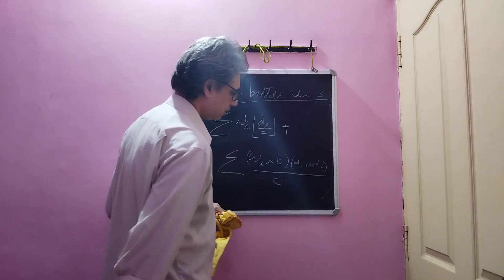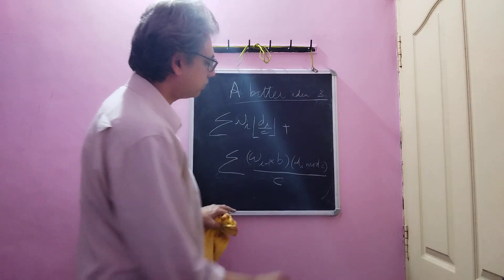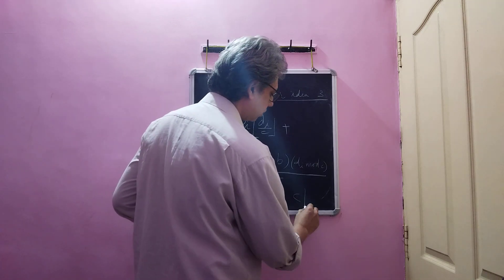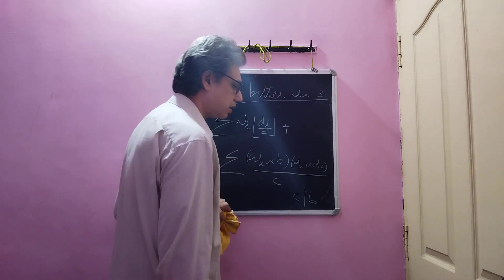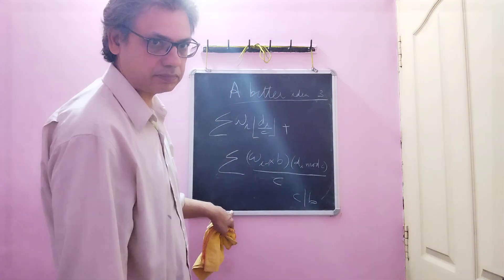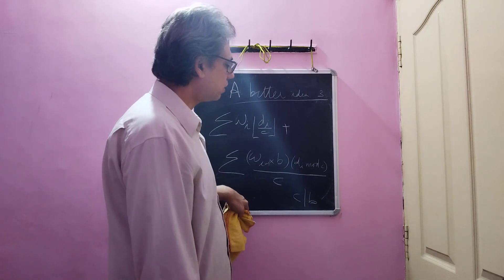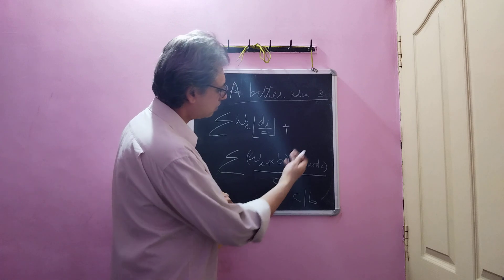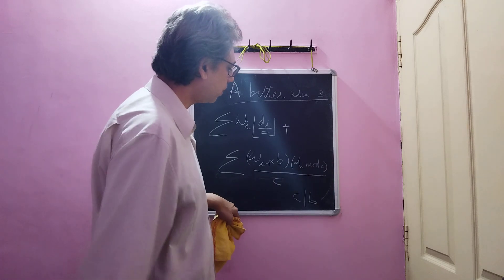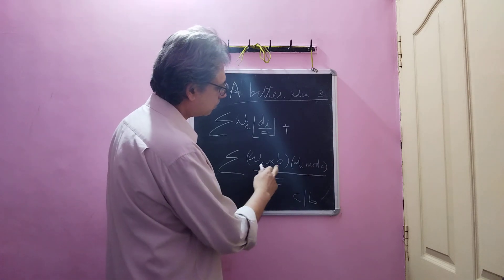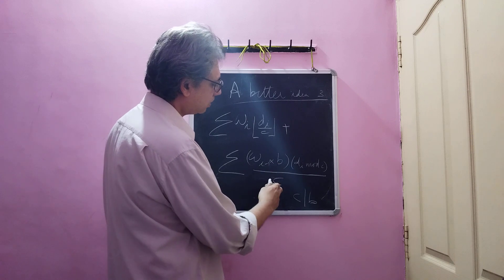By c by c. Now if c divides b, say if b is a perfect square, say b is a byte, 2 power 8, then 2 power 4, then a byte can be reduced to a nibble because wi minus 1 into b by c will be.